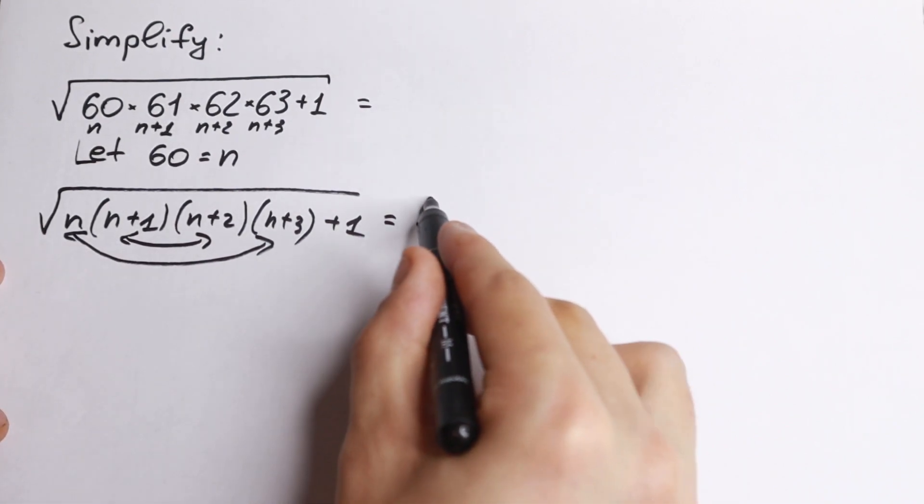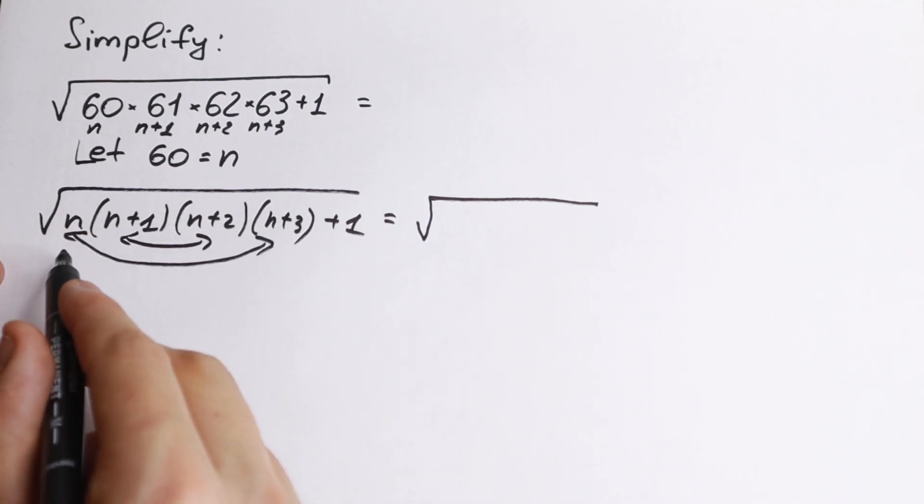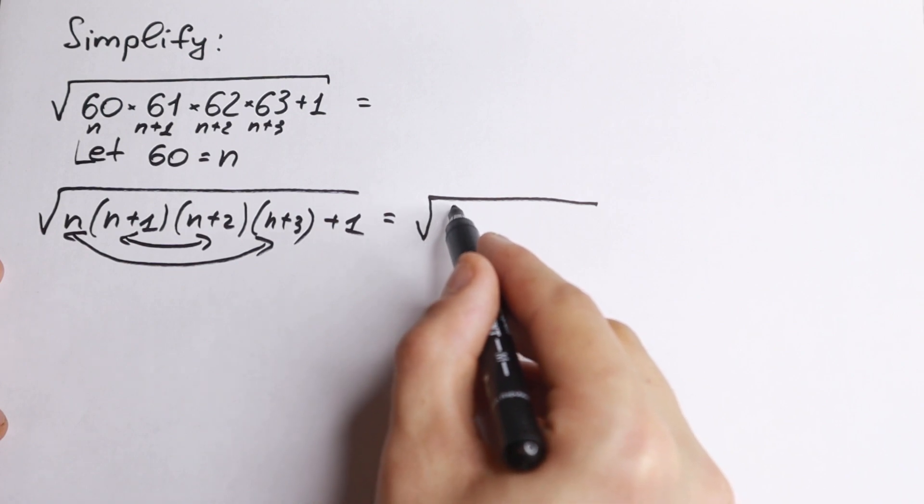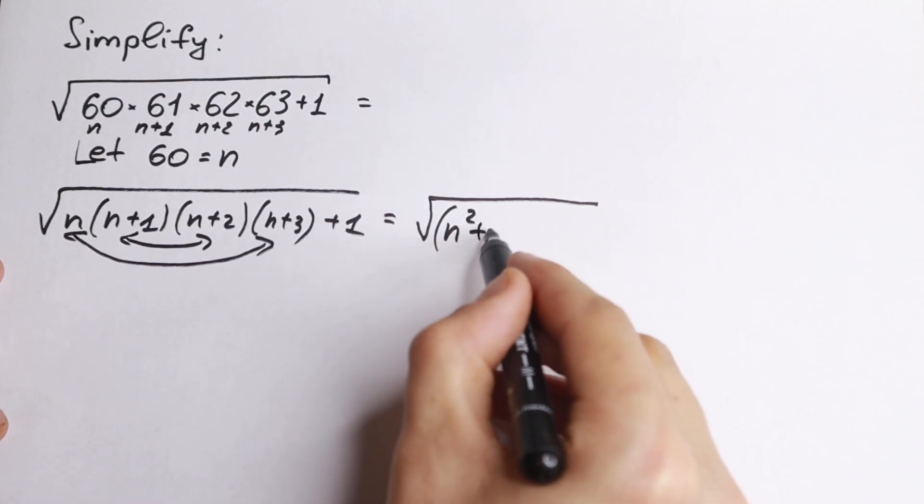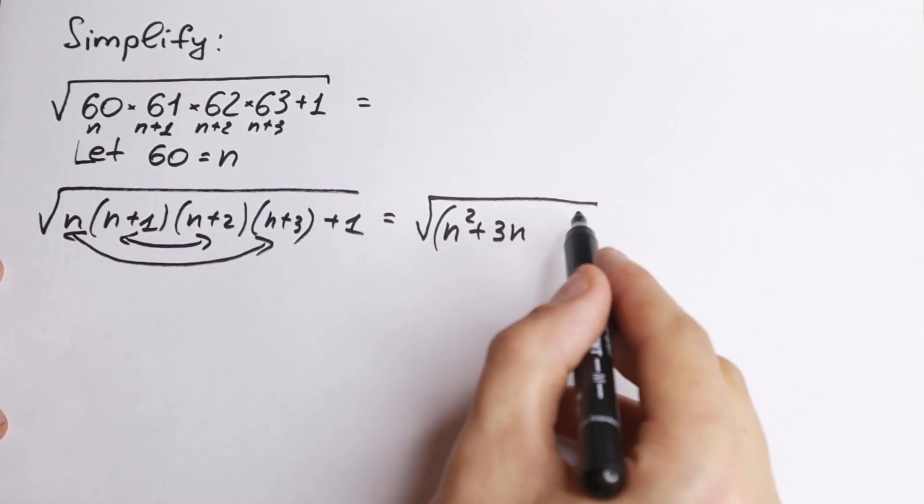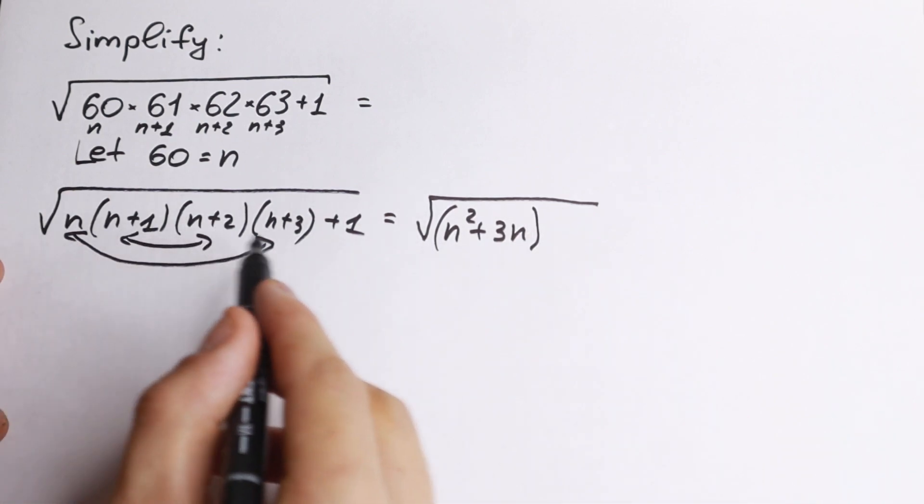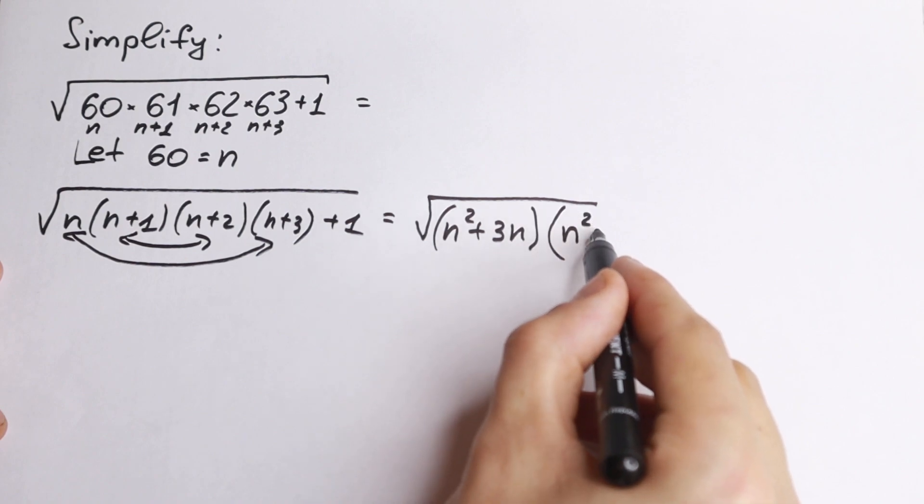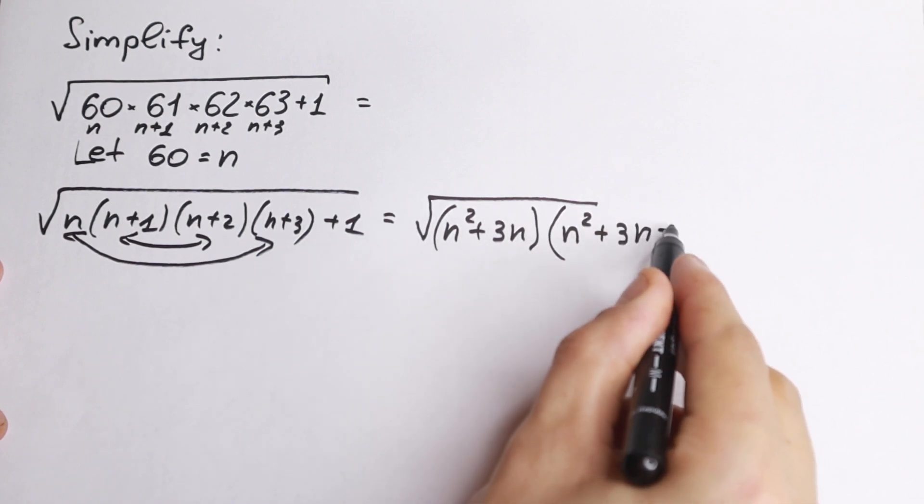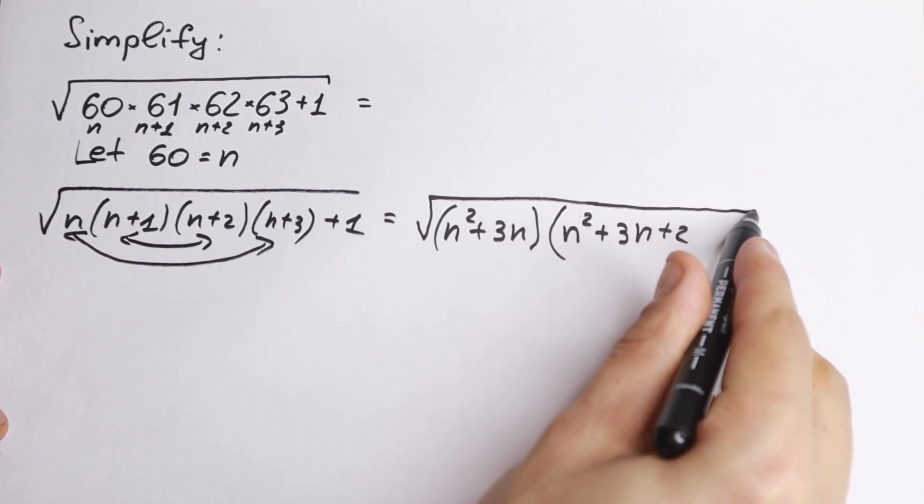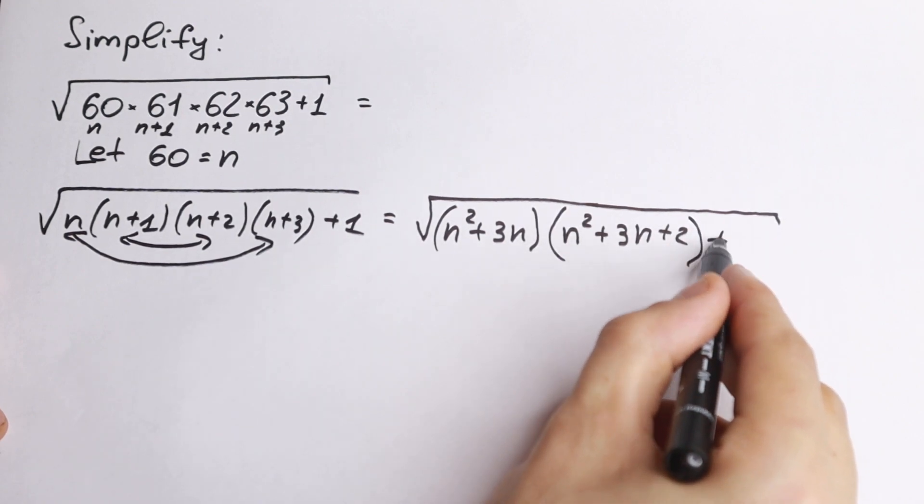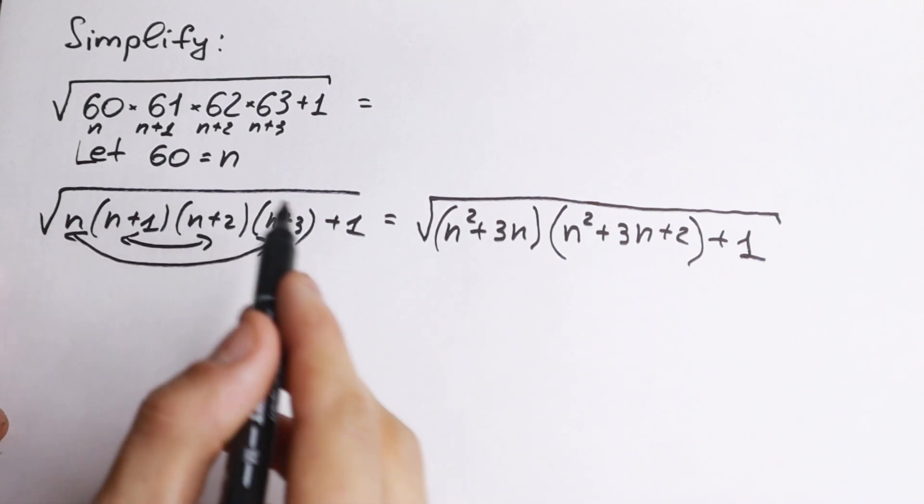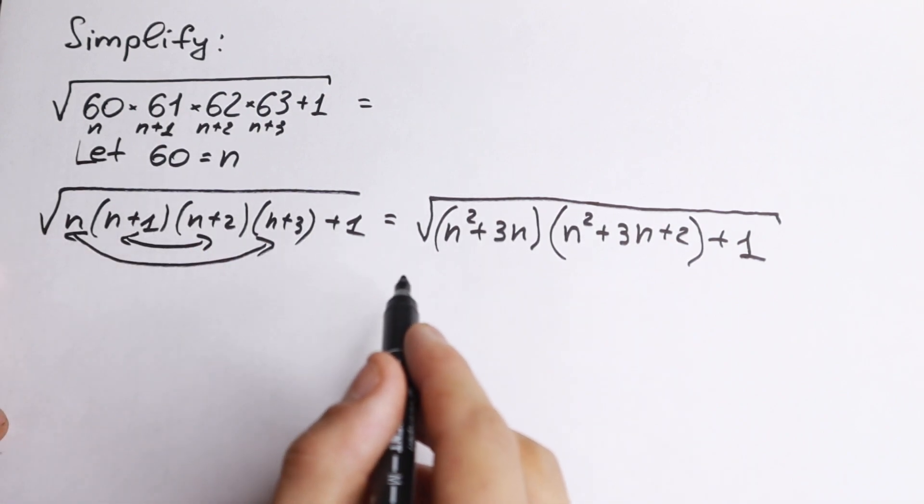We have square root. If we multiply this n times n plus 3, we will have n square plus 3n. Yeah, we have this moment. And right now multiplying these two parentheses, we will have the next one. We will have n square plus 3n and plus 2. We will have this case and plus 1 in the end. So what I did right now, I multiply parentheses, this first with this fourth and this in the middle by itself.